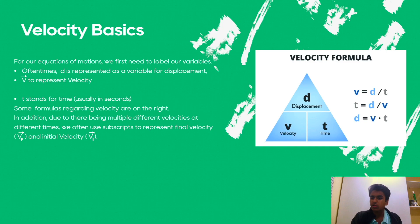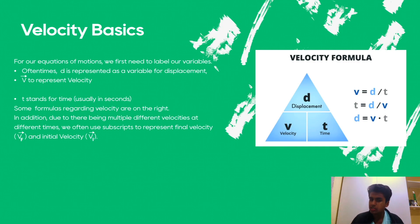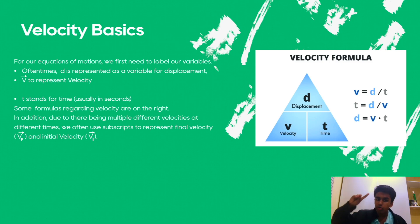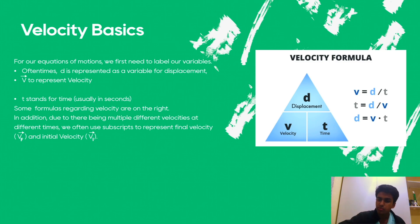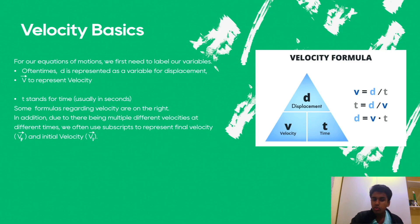T stands for time. Delta x, which is the change in x, represents displacement. For velocity, you need to be very specific because in a problem you might have multiple different velocities — for example, final velocity or initial velocity. That's why you use subscripts: a subscript of f means final velocity, while a subscript of i means initial velocity. Be very specific in problems if you want to maximize your chance of getting a 5 and an A in your class.